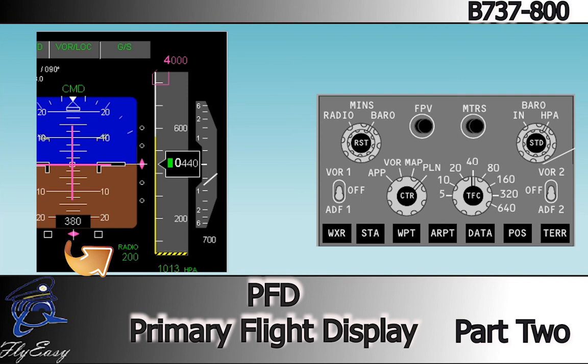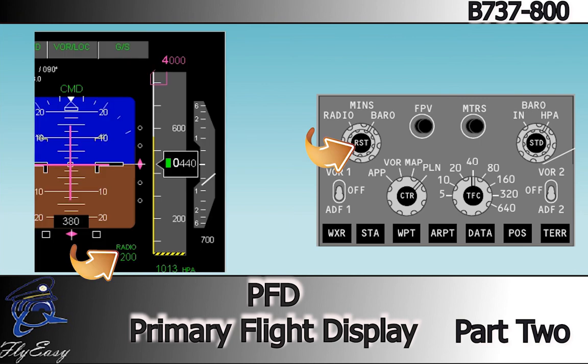When radio minimums are selected, the display shows radio and the selected minimums value, but no pointer is displayed. The radio and minimums display turn amber and flash for three seconds when the aircraft descends through the selected minimum altitude. The minimums reset, or inner knob, is pushed to reset the PFD minimums alert display and also blanks the minimums display when it is green.